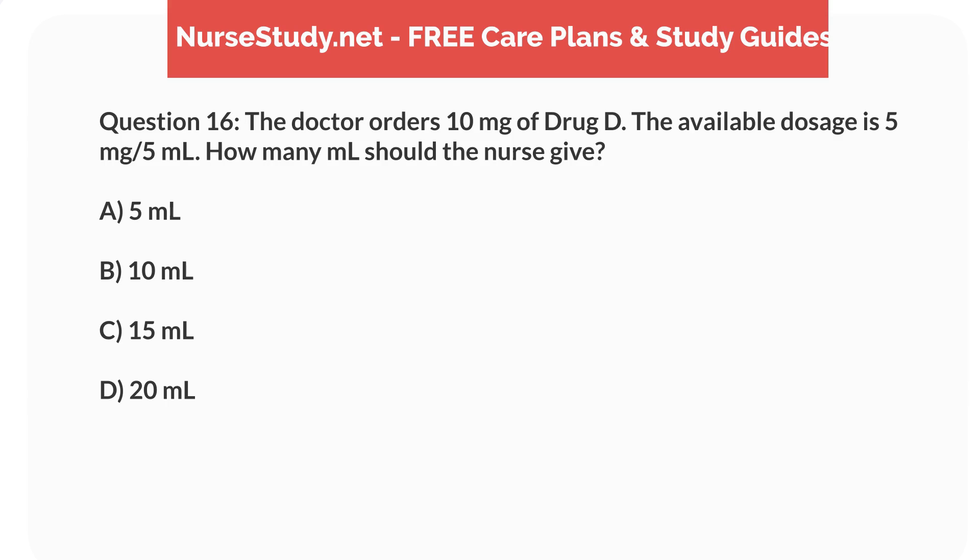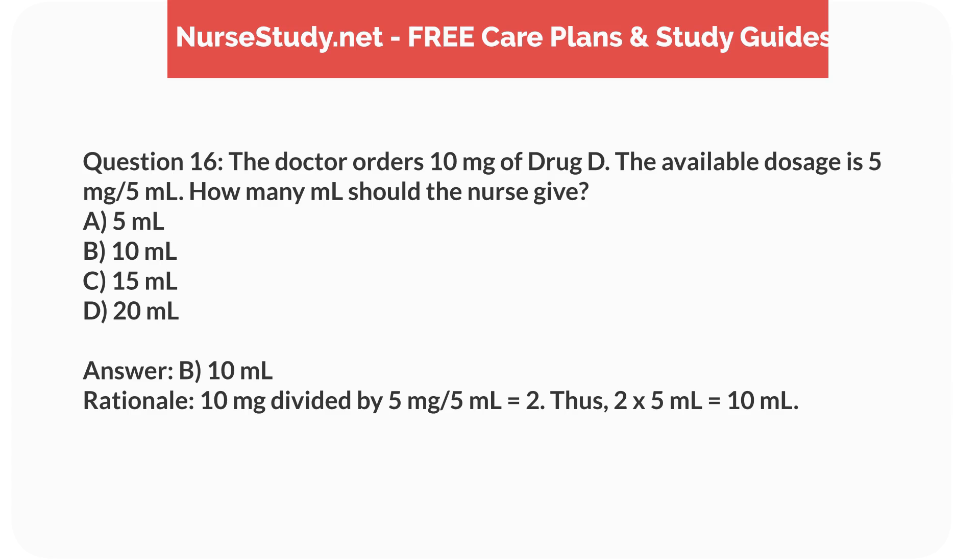Question 16. The doctor orders 10mg of drug D. The available dosage is 5mg per 5mL. How many mL should the nurse give? a. 5mL, b. 10mL, c. 15mL, d. 20mL. Answer: b. 10mL. Rationale: 10mg divided by 5mg per 5mL equals 2. So, 2 times 5mL equals 10mL.